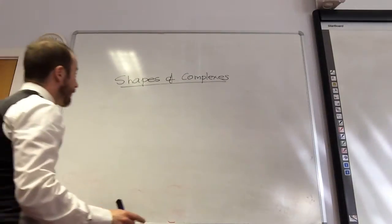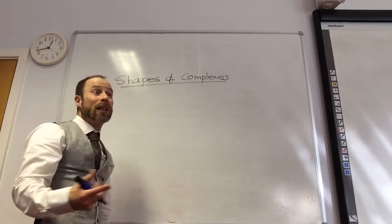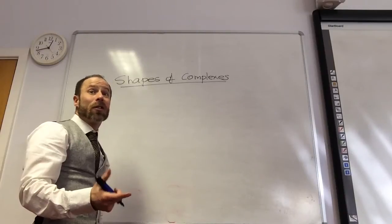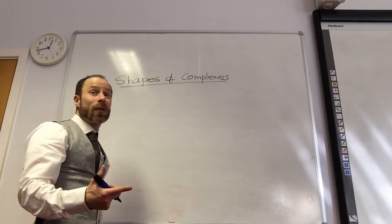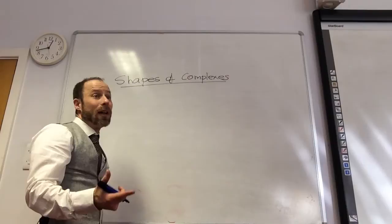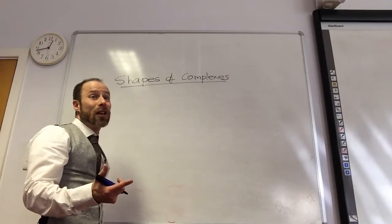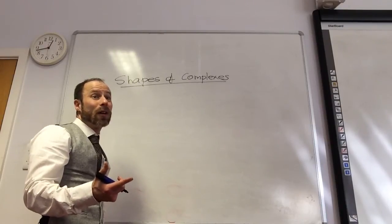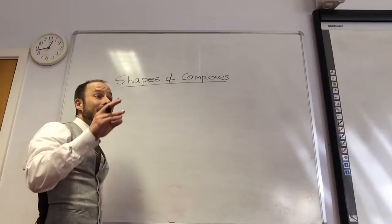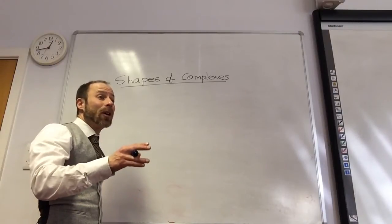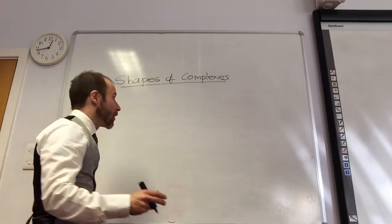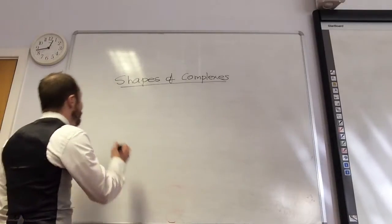The shapes of complex ions link really nicely into atoms, bonds and groups. If you remember your shapes from atoms, bonds and groups, it's pretty similar to what we're going to do now. The only thing that's different is you don't worry about lone pairs — it only depends on the number of dative bonds you've got, so the number of coordinate bonds.